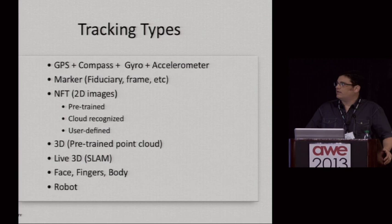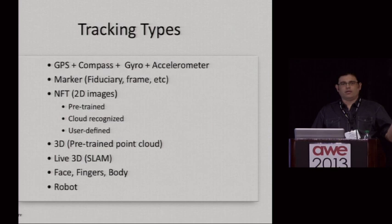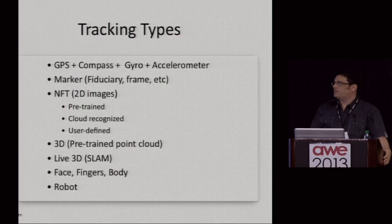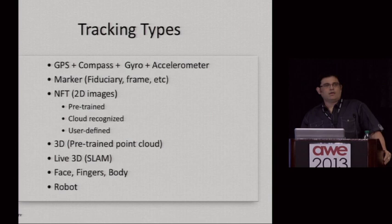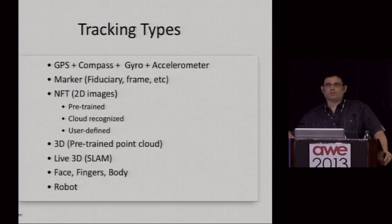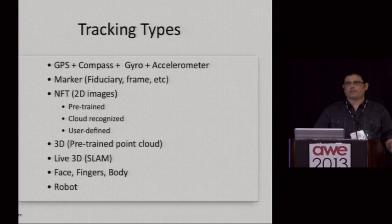Here's a sampling of various tracking types. Traditionally there was GPS and sensor tracking — you've probably seen the Yelp Monocle, Metaio's Junaio, or Layar, where you wave your phone around and see points of interest in the distance. Then we get to marker tracking, which is more of a fiducial black-and-white type of marker, or in the case of Qualcomm, they have frame markers — it's more of a predefined, simple imagery. More recently, especially in brand engagements, people are interested in NFT, natural feature tracking, or image tracking, where you're tracking a more natural-looking image — a photo, a side of a cereal box, something like that.